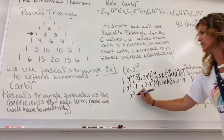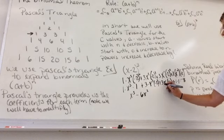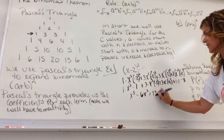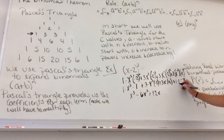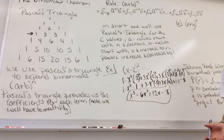One times one times x cubed is x cubed. We have three times negative two. That's negative six x squared. Then I have three times four. That's a positive 12x. And then plus one times one times negative eight is a minus eight. And here it is expanded.